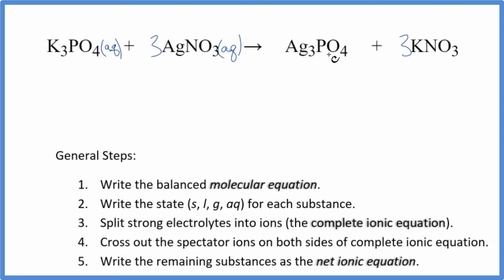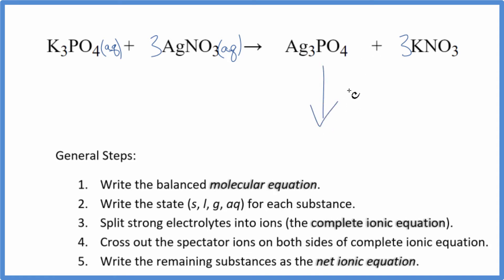Phosphates in general are insoluble. Silver compounds often are insoluble as well. Silver phosphate is going to be insoluble. So these two substances react and we get this solid — this insoluble compound. It doesn't dissolve; it sinks to the bottom of the test tube as a precipitate. So this is a precipitation reaction. That'll be a solid — that's our precipitate.